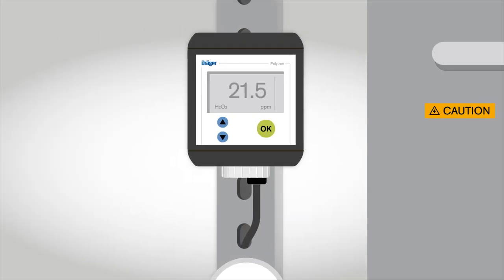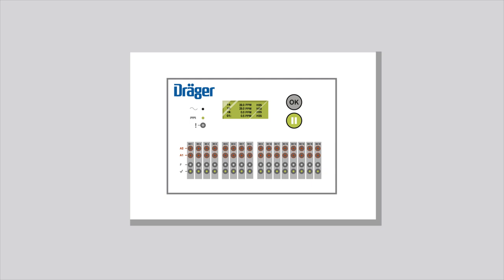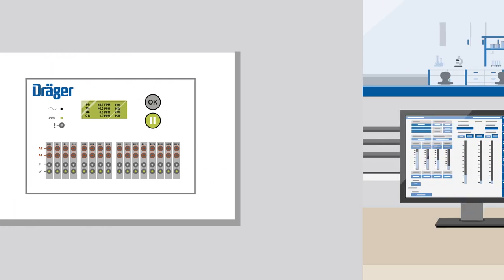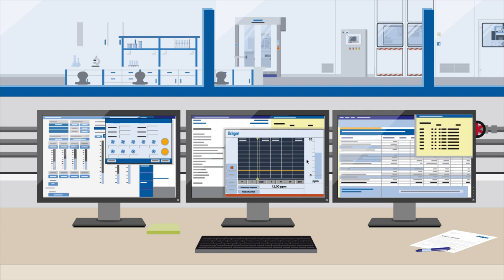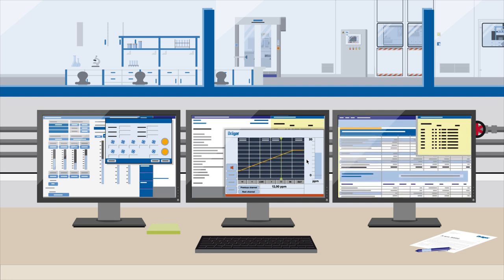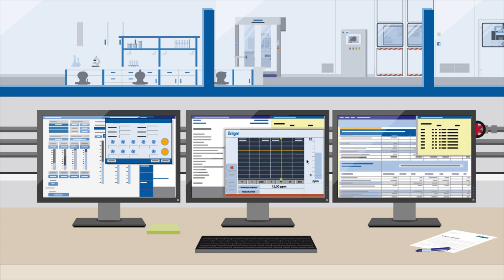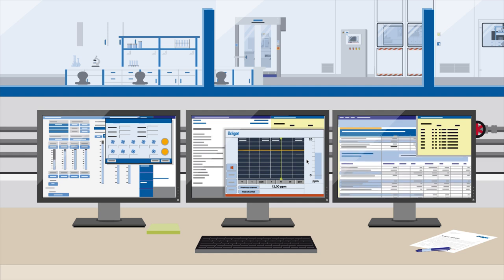The measured values, via a transmitter, are transferred to a controller for processing. In the last step, the measurements are visualized. In the technical control room, engineers can always view the hydrogen peroxide concentration and can respond to an alarm immediately.